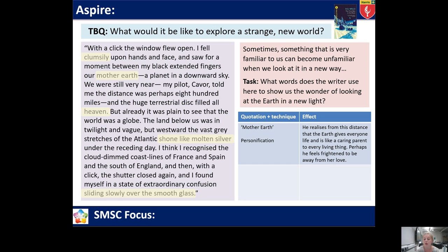Perhaps the narrator feels frightened to be away from her love. So we've got the 'Mother Earth' quotation, the technique of personification, and the effect it creates is that the world is almost like a caring parent — it makes us feel safe and secure, just like a mother might. Please see what other techniques and quotations you can find and think about what effect they create. Why has the writer chosen to use these references? Please pause and have a go at that task, then we'll come back together and share what you might have come up with.